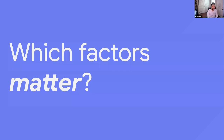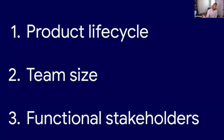I like to pose this as: what are the key factors that actually matter when taking a new PM job? There are three in particular I want to talk about today. The first is the lifecycle of the product — where in the project trajectory is your team operating? That has a big impact on the types of activities you perform. Second is team size — how many total people are you working with? And third are the functional stakeholders — who are the types of people you're actually interacting with and what parts of the company are they coming from?